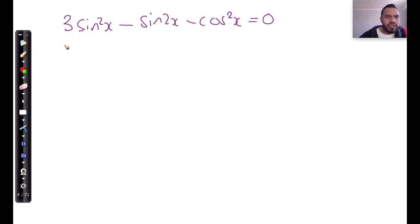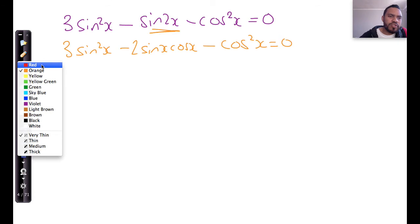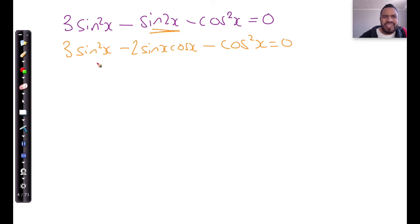So 3 sine squared x remains 3 sine squared x. Sine 2x is something we can convert into minus 2 sine x cos x, minus cos squared x. Now at this point, you should be able to recognize that this is a perfect square: two times that thing, that thing. This has to be some kind of quadratic equation.